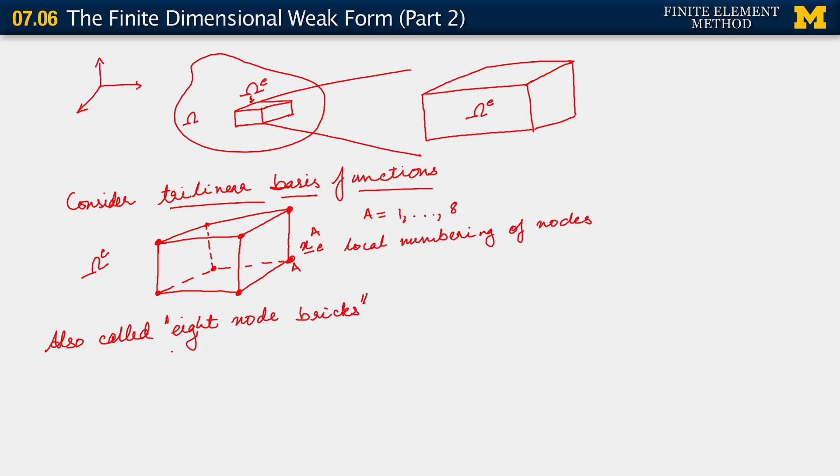If we know that a runs over 1 through 8, let us then use that to write out our basis function straight away. Now what we have is u h sub e, that's u h in element e, is the sum a going from 1 to number of nodes in the element, which we know, by the way, is 8, because of the fact that we've chosen to construct trilinear basis functions. These basis functions are in general written as being parametrized by physical position in physical space x.